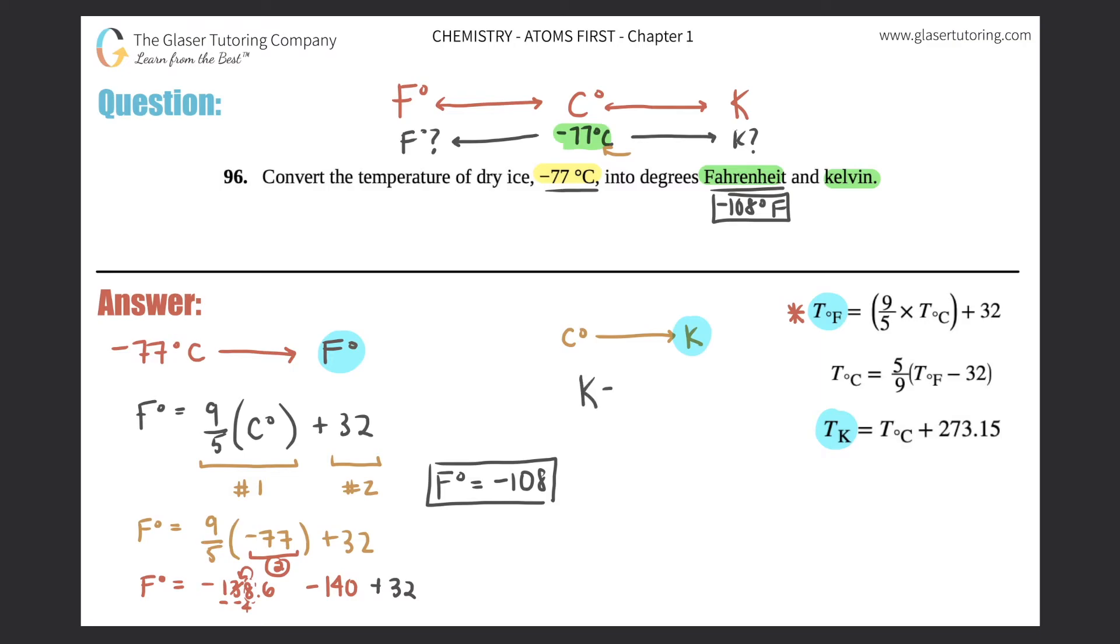So Kelvin equals Celsius plus 273.15. Kelvin equals Celsius, which was negative 77, plus 273.15. This is addition, so you use your addition rules of sig figs. It's the least number after the decimal. Now since there was nothing here right, there is not even a decimal, there's nothing after the decimal, so zero sig figs after the decimal. There was two here, but still you take the lowest number.